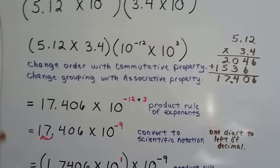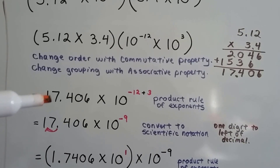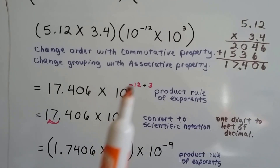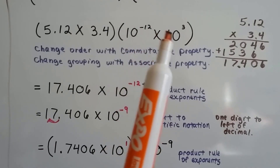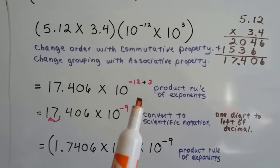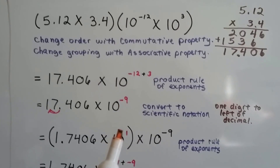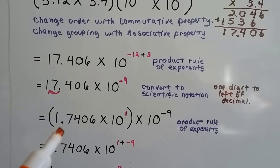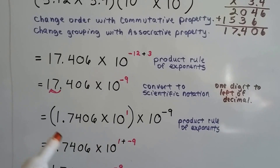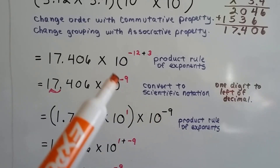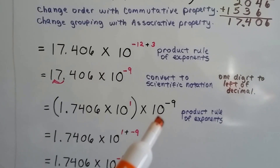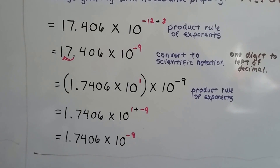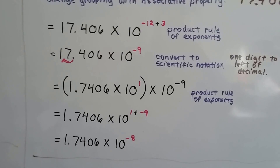We have 17.408, but we need only one digit to the left of the decimal, so we need to move it over 1. Over here, we've got negative 12 and 3 — negative 12 plus 3 gives us negative 9 by the product rule of exponents. To convert to scientific notation, we multiply by a positive 1, and 1 plus negative 9 is negative 8. So our answer is 1.7408 times 10 to the negative 8th.